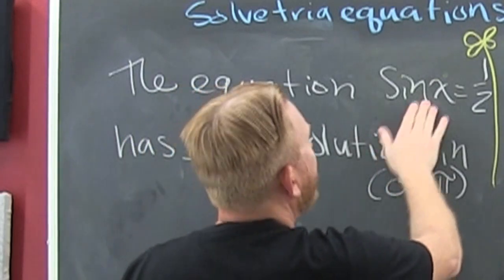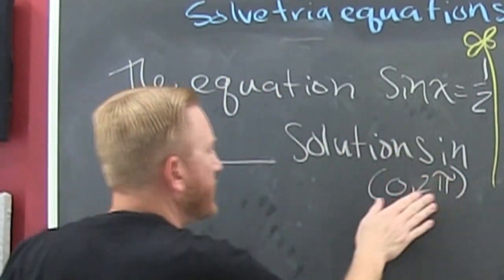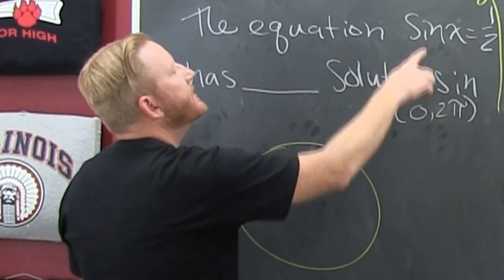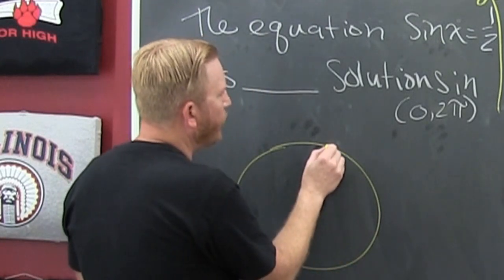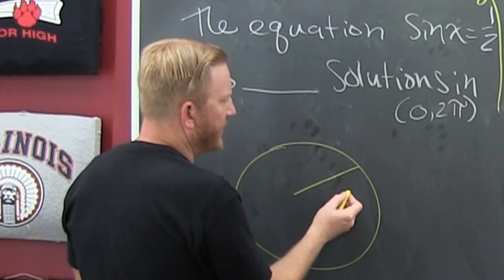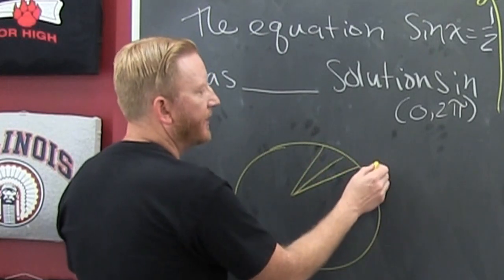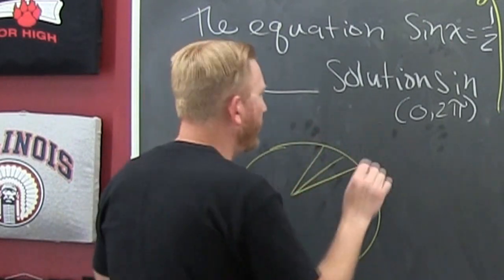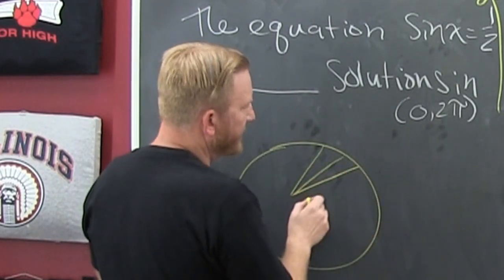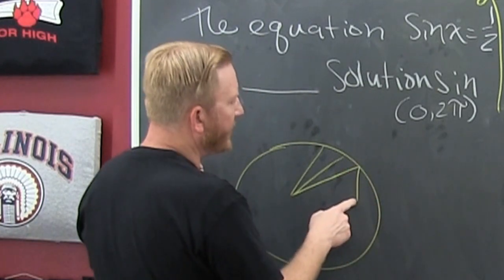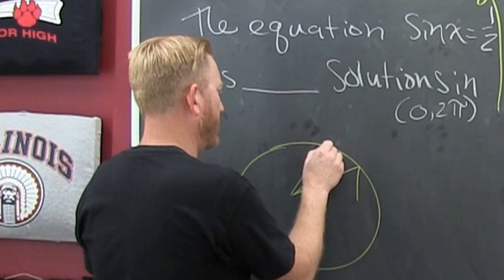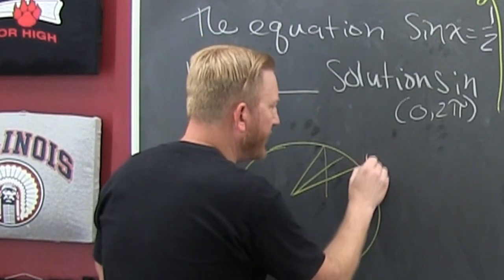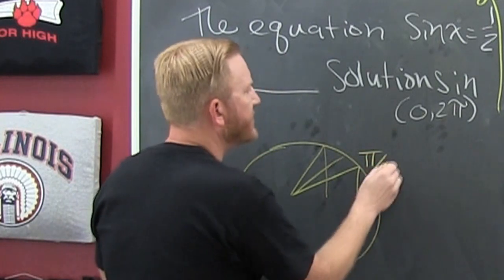The equation sine x equals one half has solutions in... Now, if it's sine x or sine y, sine governs y. So we're looking for where the y value is one half. Now you have the big three: the 30, 45, 60. We're in radians now. So the sine is the y, so it's the little y. I'm talking about, is it one half or is it root three over two? It's the little one. So it's right here. That's pi over six.